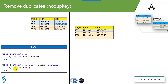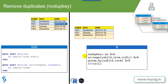Now how do we do this in R? We use the piping symbol to pass one dataset as input to the next function. We create a dataset named nodupkey using the ae dataset as input, passing it to the arrange function. Just as in SAS, we want the record with the earliest start date within a subject and term to come on top, so we use the arrange function for that.